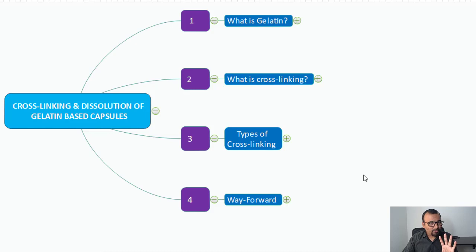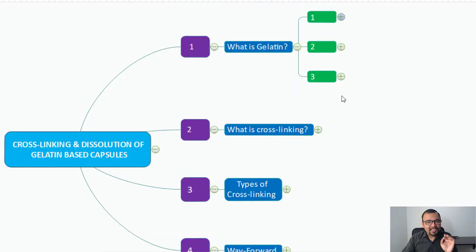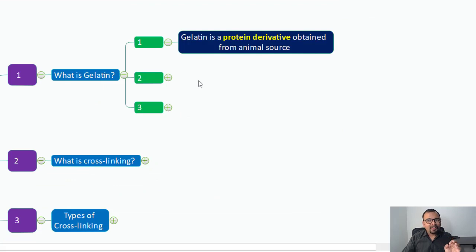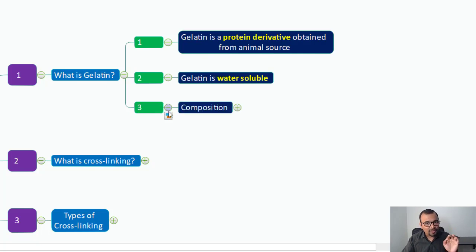Let us begin with the presentation. These are the four important points that I am going to walk you through. First, understand what is the meaning of gelatin. Gelatin is nothing but protein and is derived from animal-based sources. The second important point is gelatin is water soluble, but the cross-linked form of gelatin is not water soluble, and that is the reason why you are not able to get drug release out of your dosage form.